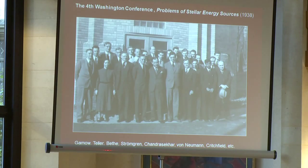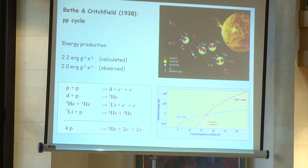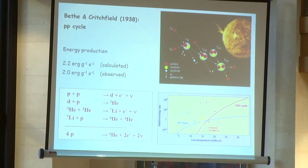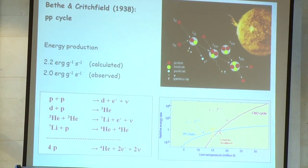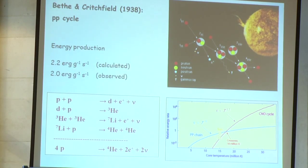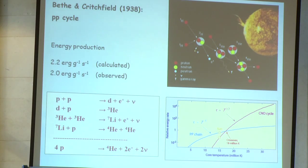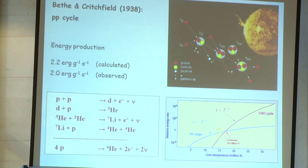A direct outcome of this conference was the so-called PP cycle, which was not really Bethe's idea but the idea of Charles Critchfield, a young American student of Teller. When he met Bethe they collaborated, and within a very short time came up with a full-blown quantum mechanical nuclear theory of what happens in the sun — the PP cycle, starting with two protons forming a deuteron, then helium isotopes. But the net result is the very same which Eddington had speculated about in 1920: four protons transforming into a helium nucleus.